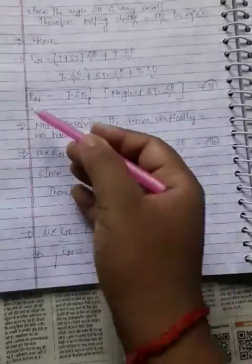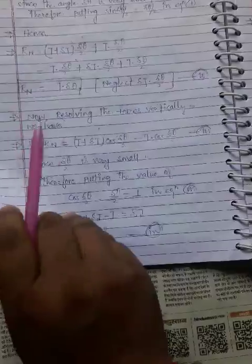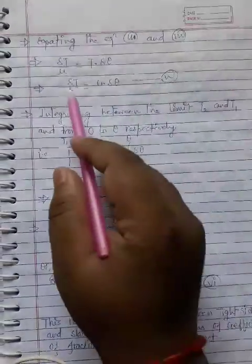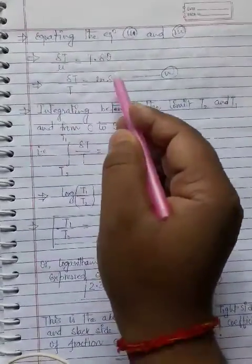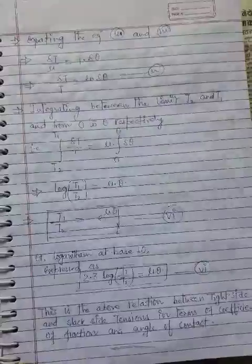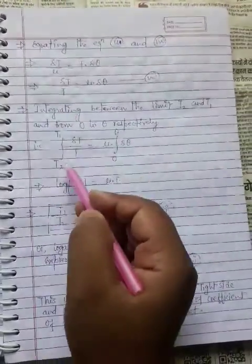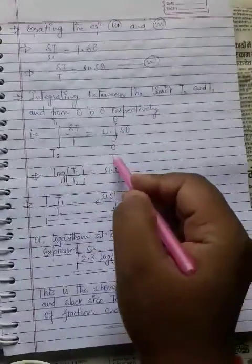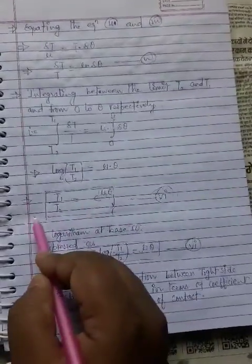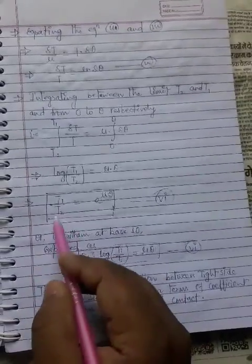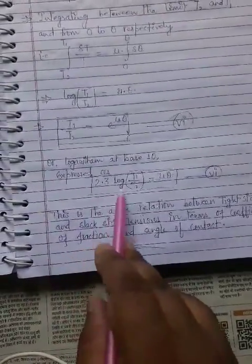There are two expressions for Rn from the two equations. Equating them, we find delta T by T equals mu into delta theta. This equation holds for a small portion PQ of the belt. To find the tension over the whole belt, integrate: integral of dT/T from T2 to T1 equals integral of mu d(theta) from 0 to theta. The final result is T1 by T2 equals e to the power mu theta. Taking log: 2.3 log(T1/T2) equals mu theta.